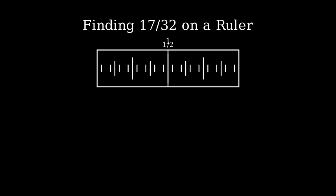To find 17/32nds, let's start by finding one half inch, which is 16/32nds. We can verify this because 16 divided by 32 equals one half.